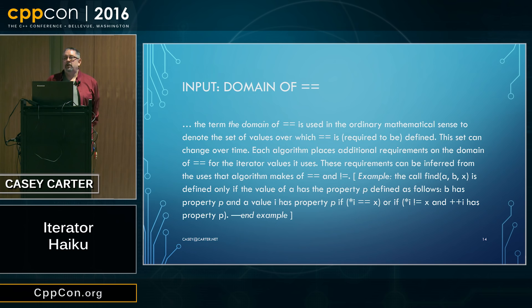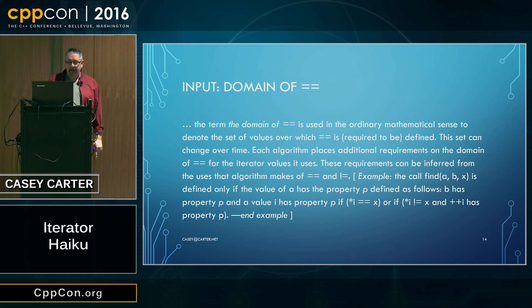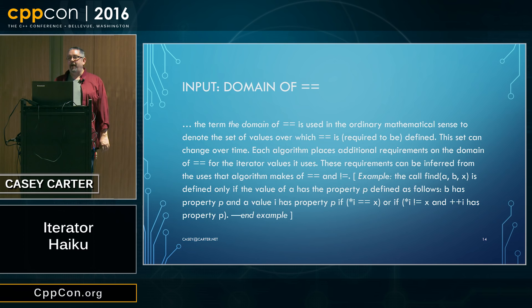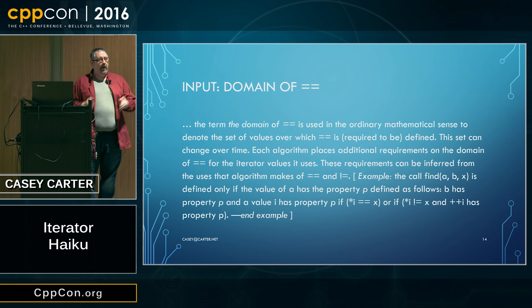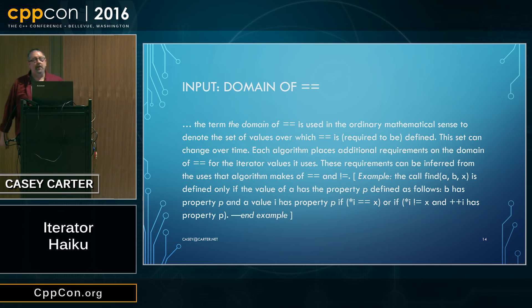For example, the call find(a, b, x) is defined only if the value a has property P defined as follows: b has property P, and a value i has property P if *i equals x, or if *i is not equal to x and ++i has property P. The point I'm making is that in order to determine when it's legal to apply equality to an input iterator, I have to examine all the algorithms in the standard library and figure out how they use input iterators.